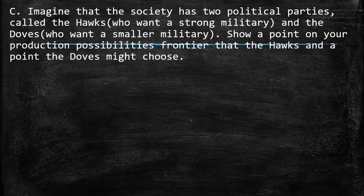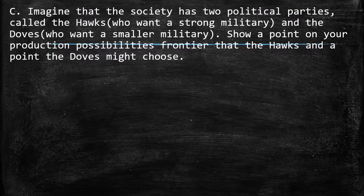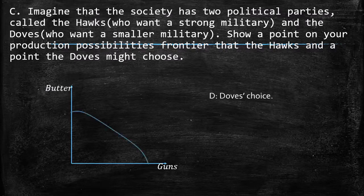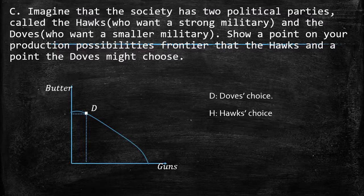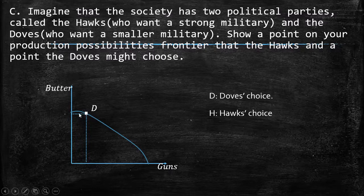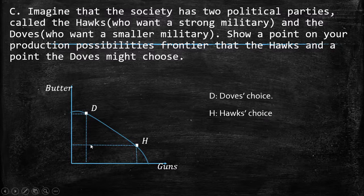Part C: imagine the society has two political parties — the Hawks, who want a strong military, and the Doves, who want a smaller military. Show a point each party might choose. We label D as the Doves' choice and H as the Hawks' choice. The Doves choose point D because they want a smaller military — less production of guns — and therefore produce much more butter. The Hawks choose point H — more production of guns and less butter. This is the trade-off: more guns means less butter, and more butter means less guns.